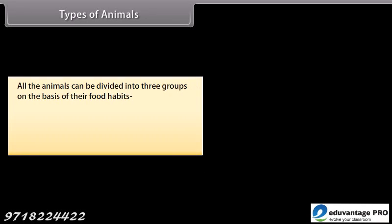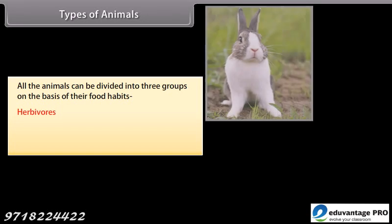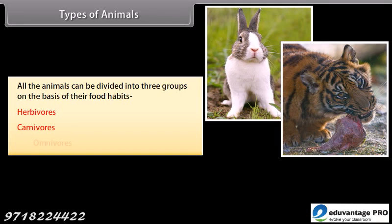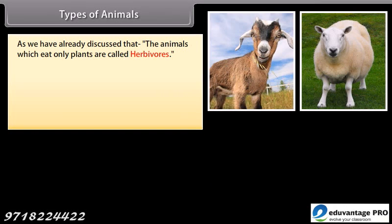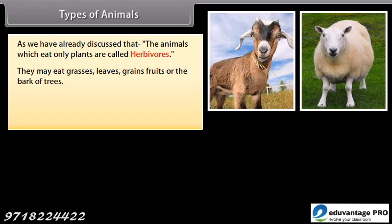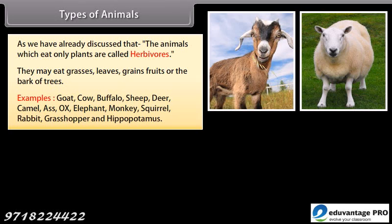All animals can be divided into three groups on the basis of their food habits: herbivores, carnivores, and omnivores. Animals which eat only plants are called herbivores. They eat grasses, leaves, grains, fruits, or the bark of trees. Examples include goat, buffalo, sheep, deer, camel, ass, ox, elephant, monkey, squirrel, rabbit, grasshopper, and hippopotamus.